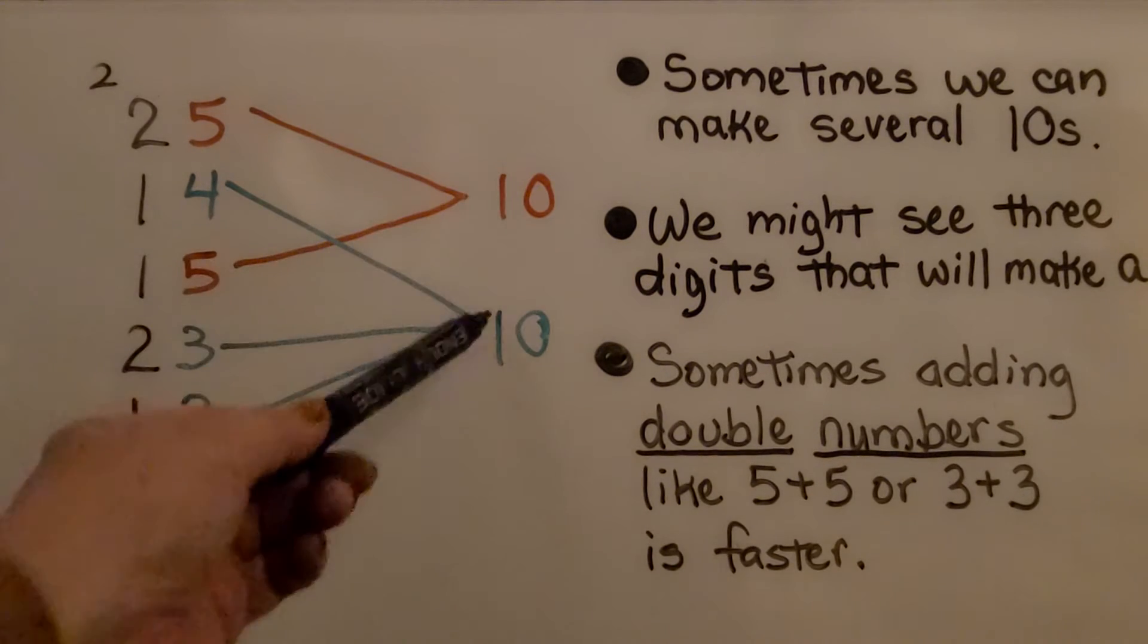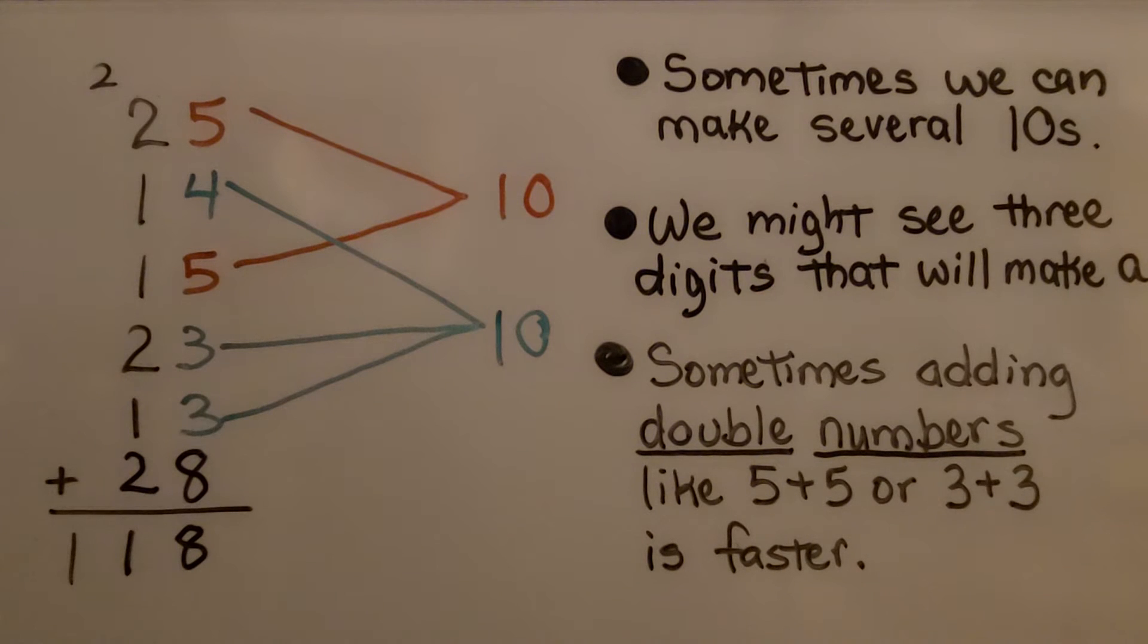So we have two tens and an 8, that makes 28. We regroup the two tens, put the 8 ones down. And now I can skip count these twos: 2, 4, 6, 8.